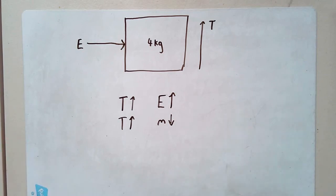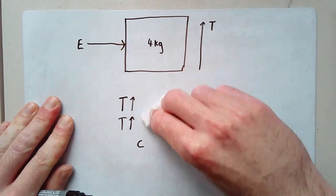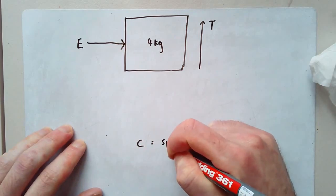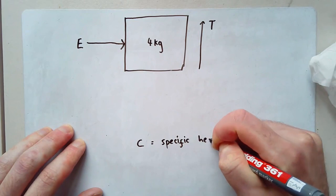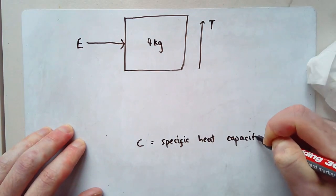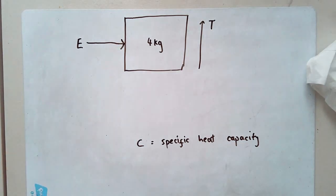It's specific because it applies to a specific material. So water has one specific heat capacity. Wood has another. Iron has another. Oxygen has another. The specific heat capacity depends on the specific thing that's in front of you. It's not universal.